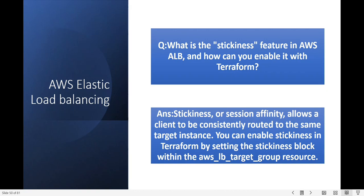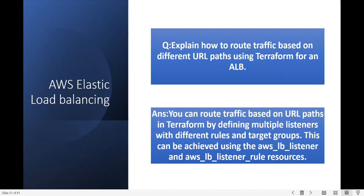Explain how to route traffic based on different URL paths using Terraform and an ALB. You can route traffic based on URL paths in Terraform by defining multiple listeners with different rules and target groups. This can be achieved using the aws_lb_listener and aws_lb_listener_rule resources.